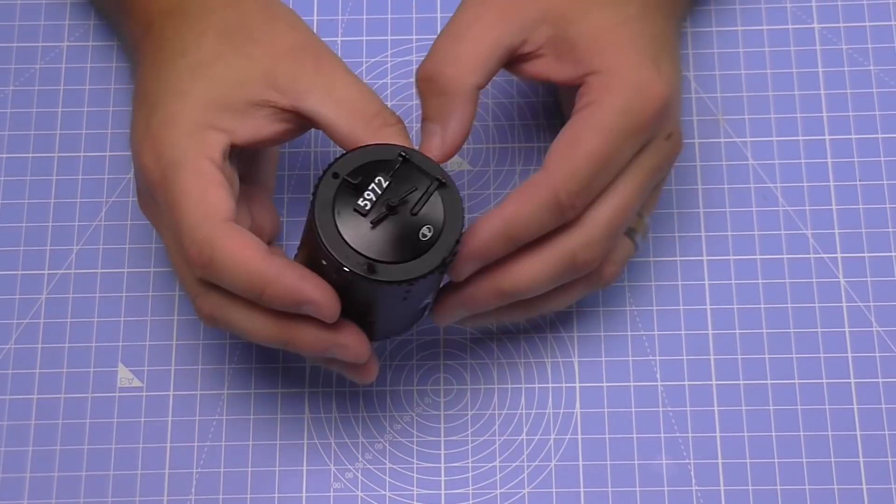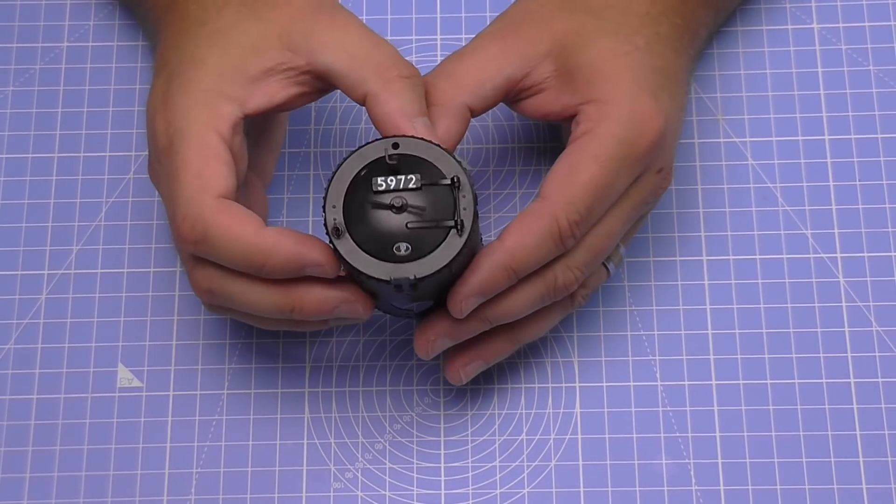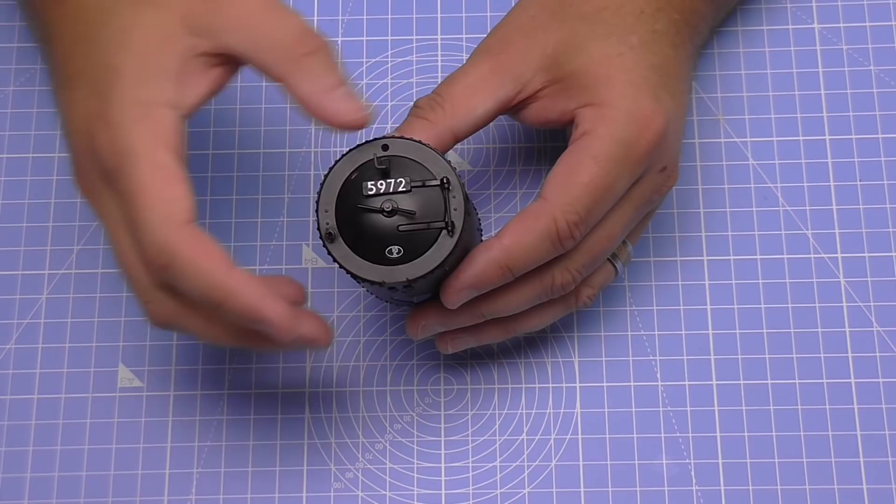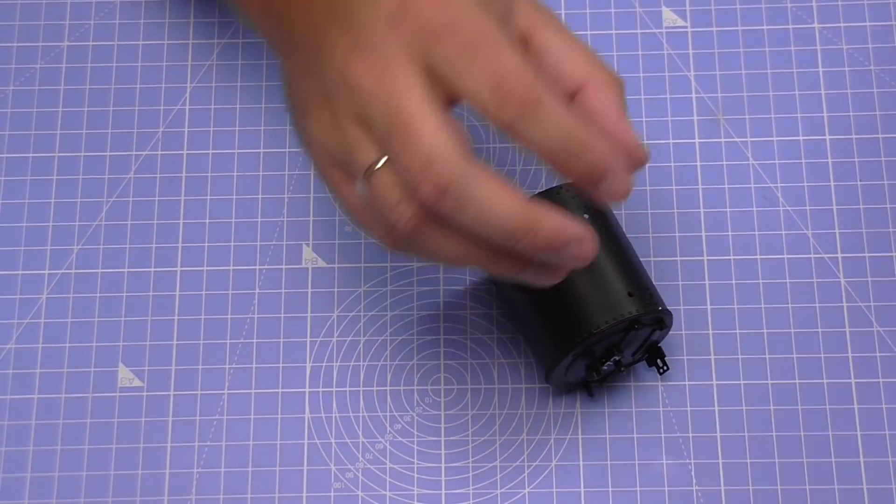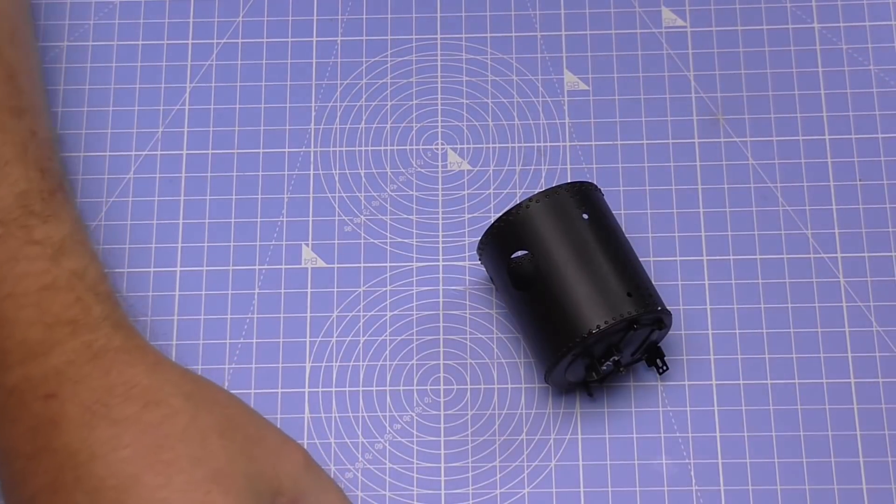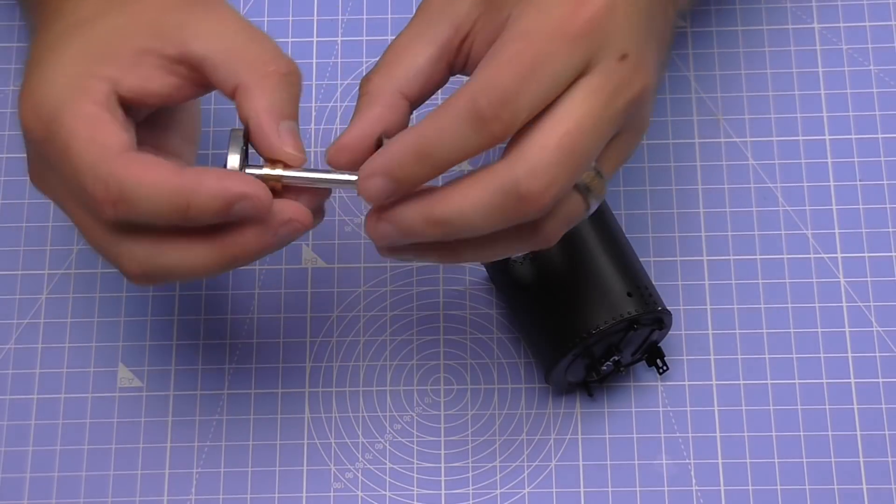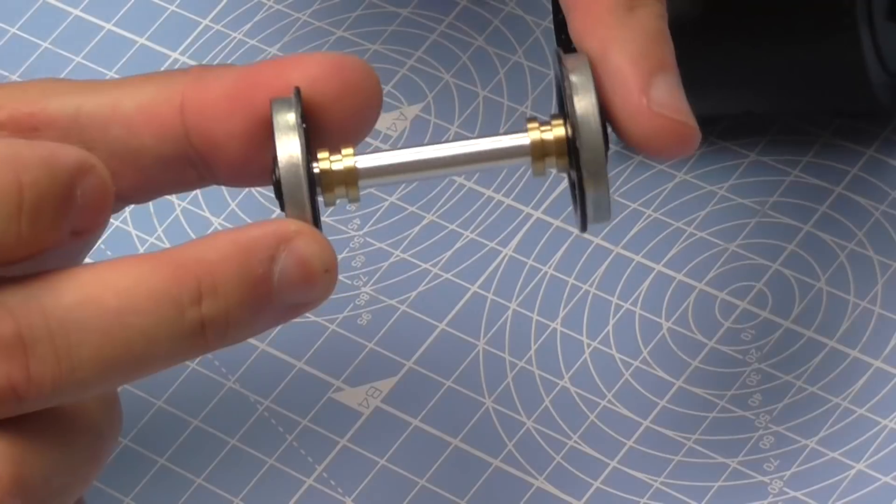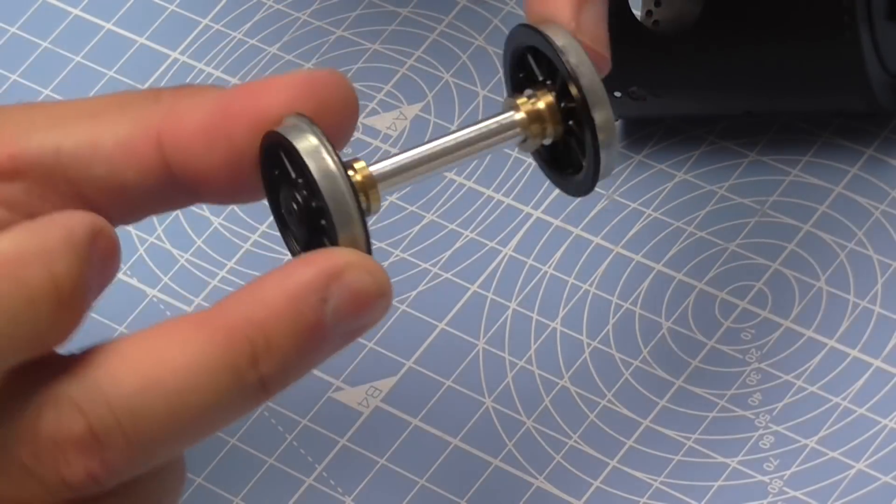Just recapping what we had last time: we've actually got the smoke box, we put the hatch on with the handle so we can open that out, we got Harry sitting on his chair here, and we've got the boogie wheels. As you can see, I put the flanges on the correct way.